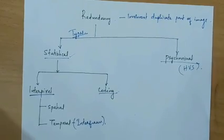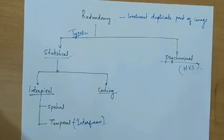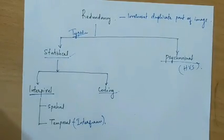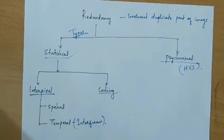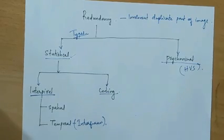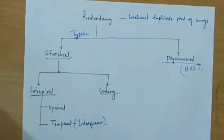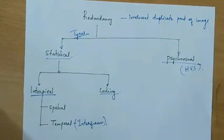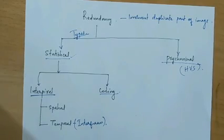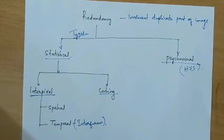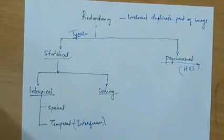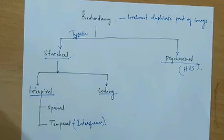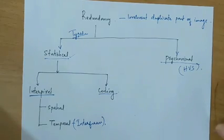The redundancy can be classified basically into two types. The first one is statistical redundancy and the second one is psychovisual redundancy. Statistical redundancy can be again classified as two: interpixel redundancy and coding redundancy.